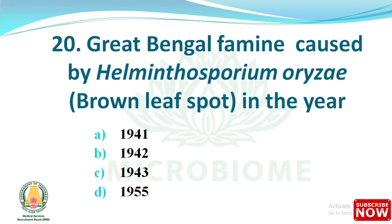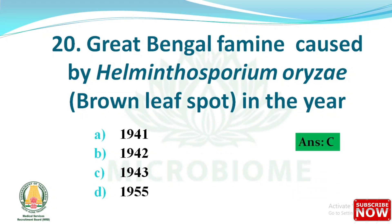Question: The Great Bengal Famine was caused by Helminthosporium oryzae, which causes brown leaf spot. In which year? Options: 1941, 1942, 1943, and 1955. The right answer is option C - 1943.